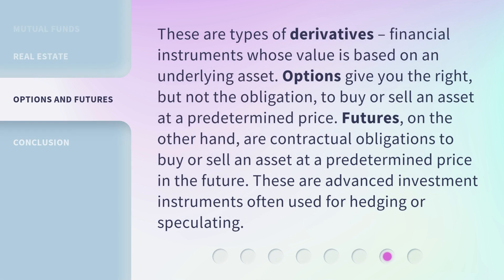Options and futures are types of derivatives — financial instruments whose value is based on an underlying asset. Options give you the right, but not the obligation, to buy or sell an asset at a predetermined price. Futures, on the other hand, are contractual obligations to buy or sell an asset at a predetermined price in the future. These are advanced investment instruments often used for hedging or speculating.